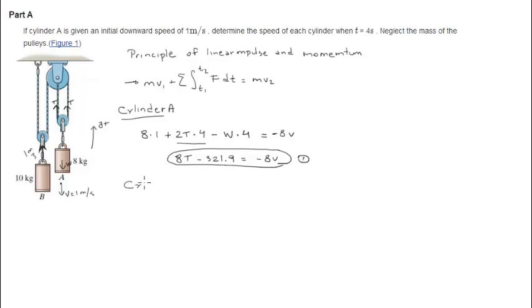Now, we're going to do the same thing for cylinder B. Now, we're going to get this equation, which says that 10, which is the mass, times the initial velocity. We're going to get an initial velocity right here. Plus 2T times 4, because again, over here we got the weight and we got the two tensions acting on it. Minus W times 4 is equal to 10v.